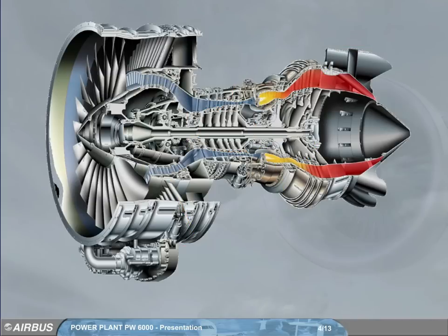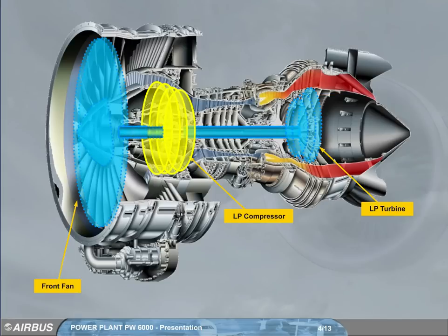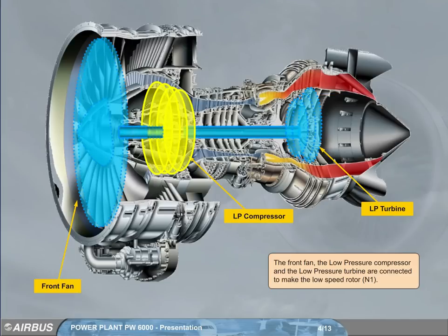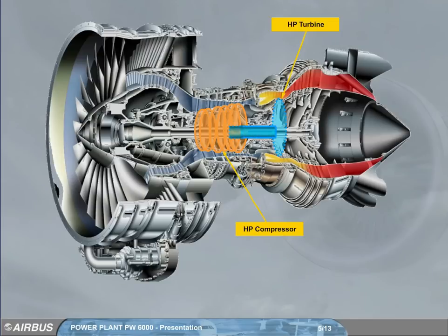The front fan, the low pressure compressor, and the low pressure turbine are connected to make the low speed rotor N1. The high pressure compressor is connected to the high pressure turbine to make the high speed rotor N2.